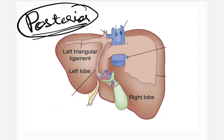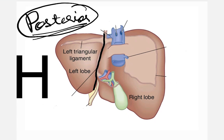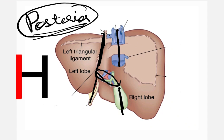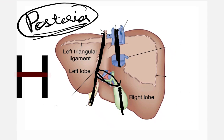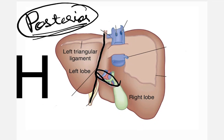Here I want you to notice an H-shaped arrangement of structures. This is the left limb of that H, this is the right limb of that H, and this is the crossbar of that H. If you try to understand this H-pattern and be particularly vigilant of each of the structures in the H-pattern, you will not miss these structures.